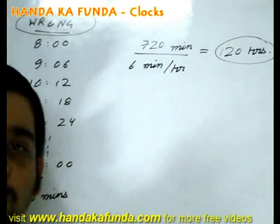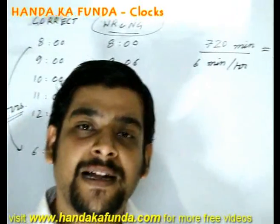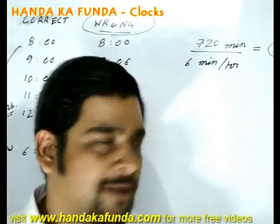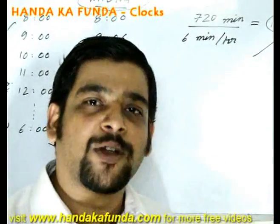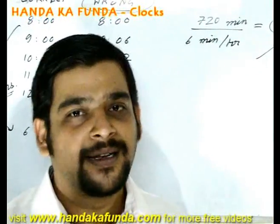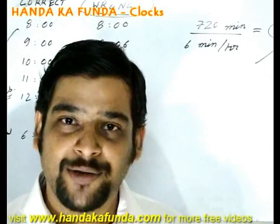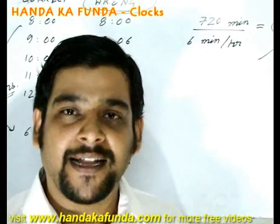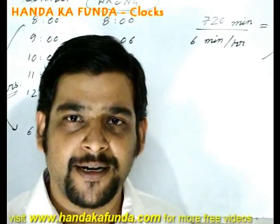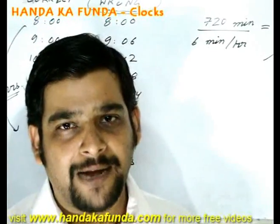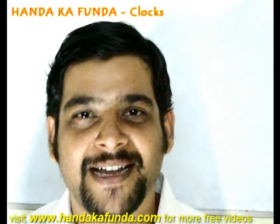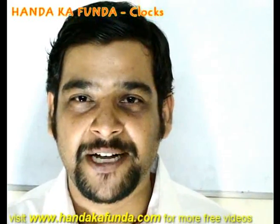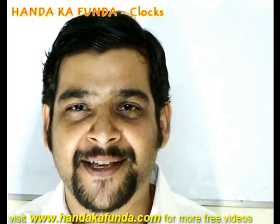What about a clock that loses 6 minutes every hour? It will also show the correct time again after 120 hours. Whether gaining or losing doesn't matter — you either need to gain 12 hours (720 minutes) or lose 12 hours (720 minutes) to realign with the correct time. That wraps up the session on clocks. Please stay tuned at Handa Ka Fanda to watch other videos on other chapters. Thank you.